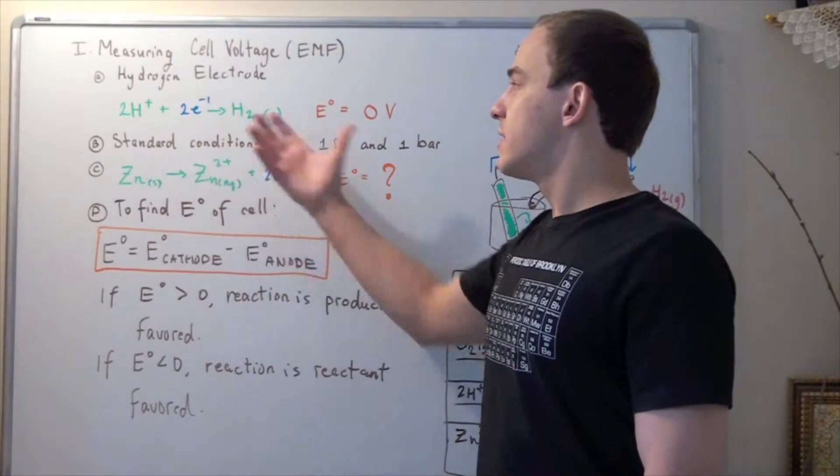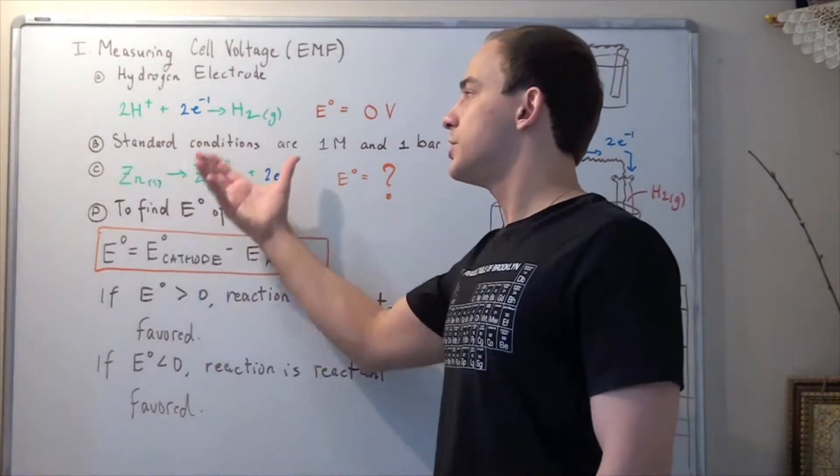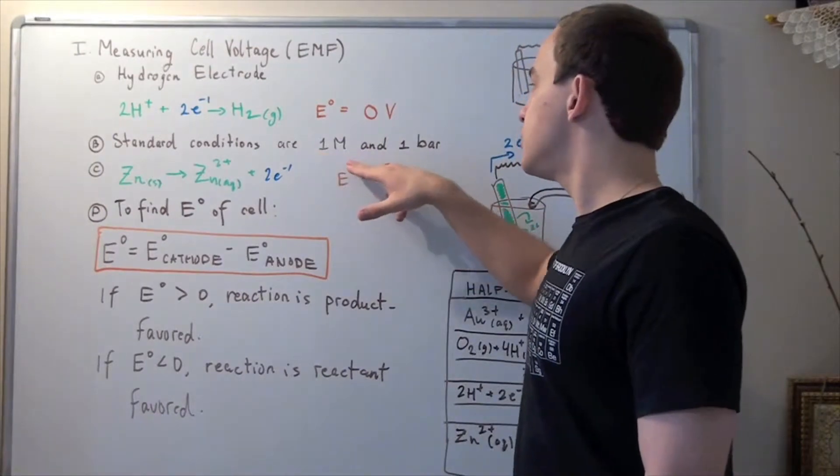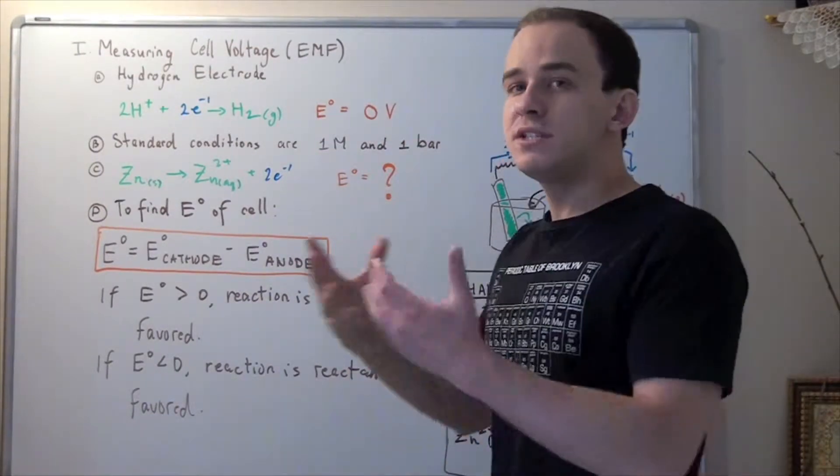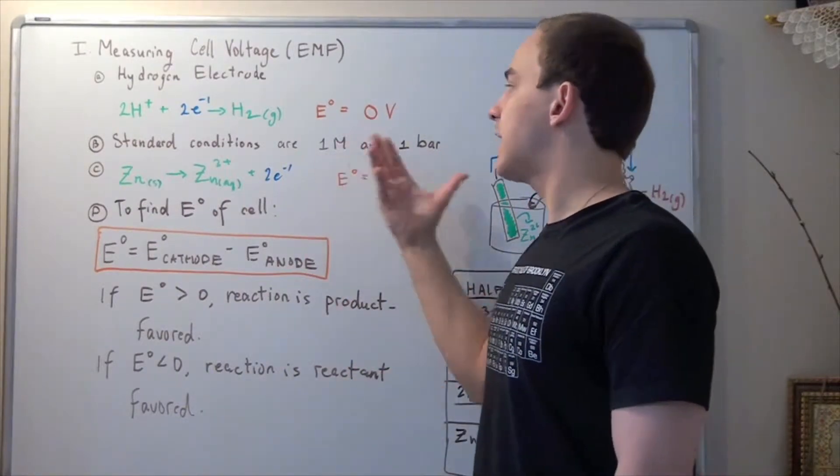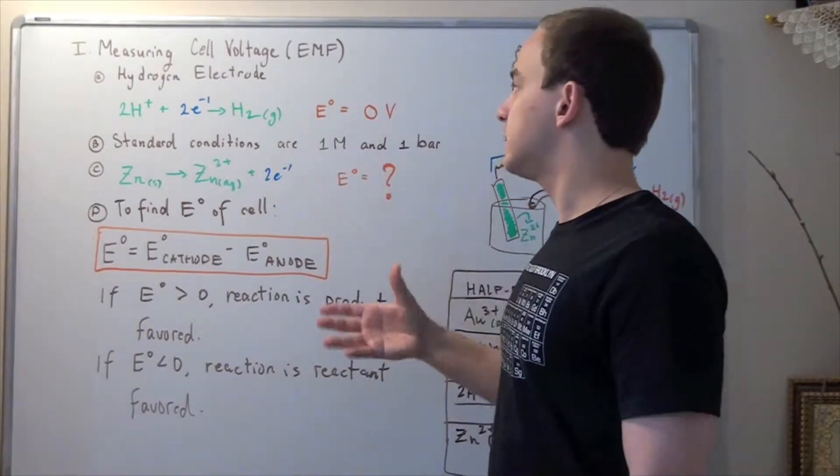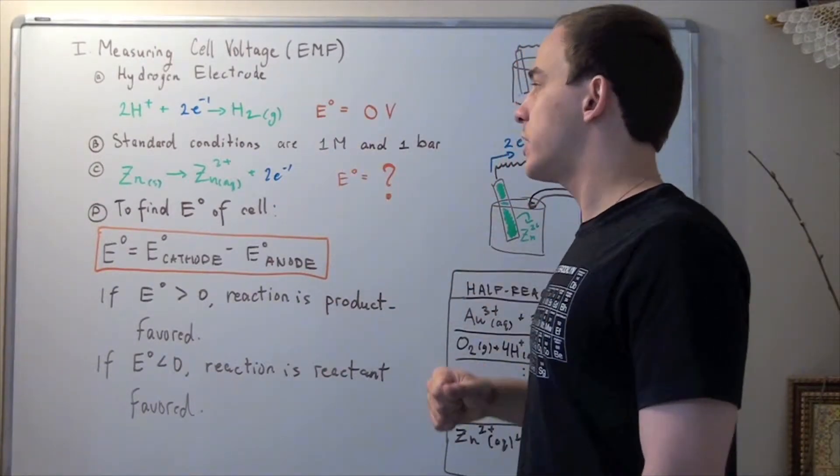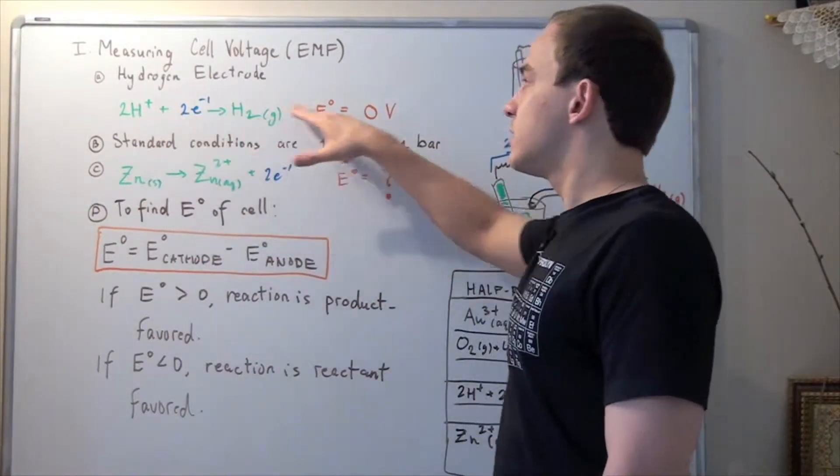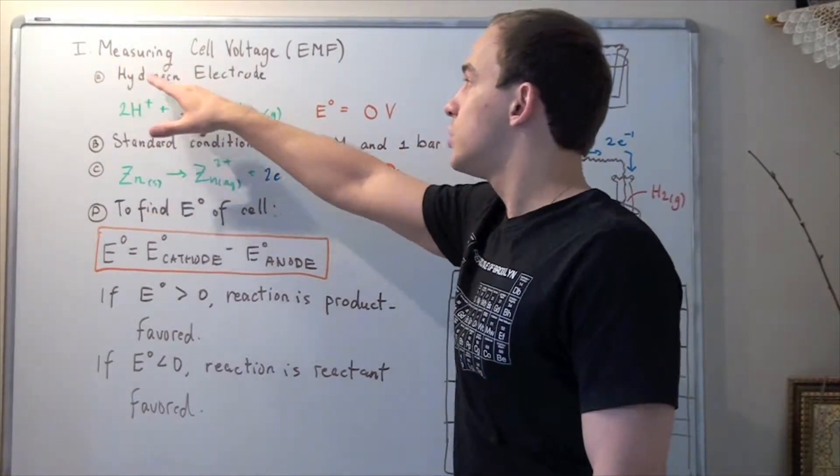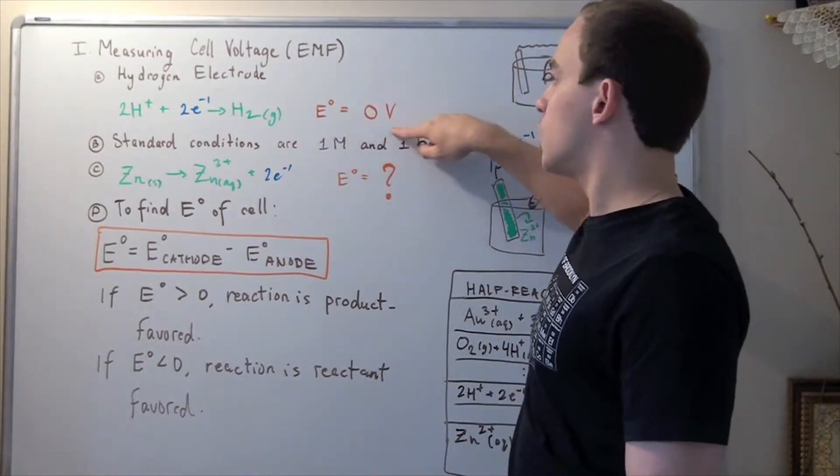So whenever we conduct these half reactions, we have to make sure that we are on the standard conditions because concentration and pressure both affect our voltage. We'll see in another lecture how exactly they affect our voltage. For now it is sufficient to say that they are affected by the pressure and by the concentration, and that is why we need to keep our conditions standard. So this is called a standard hydrogen electrode and it gets E° of zero volts.